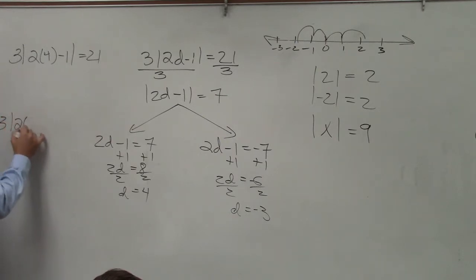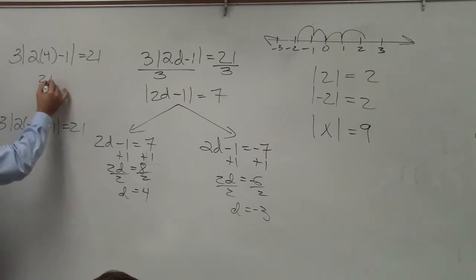Now, you don't have to always show all your work when you're checking your solution, but I'll go through this. 2 times 4 is 8. 8 minus 1 is 7. Absolute value of 7 is 7. 7 times 3 is 21. 21 equals 21. It's a solution.